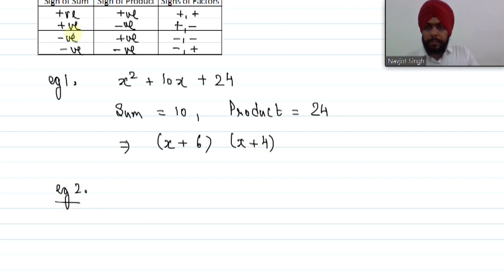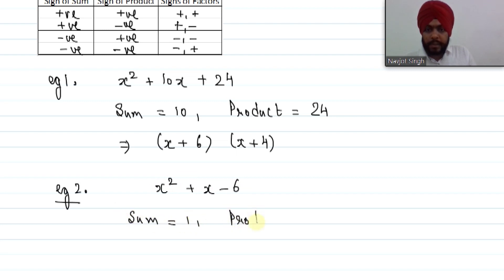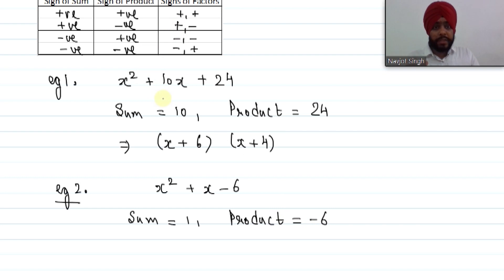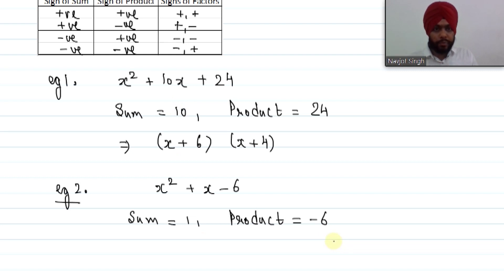Example 2 — sum positive, product negative: x² + x − 6. The sum value is 1 and the product value is −6. Product is negative and sum is positive, so we have one positive and one negative factor, with the positive factor being bigger. Two numbers whose product is −6 and sum is 1 are 3 and −2. So the factors are (x + 3)(x − 2).